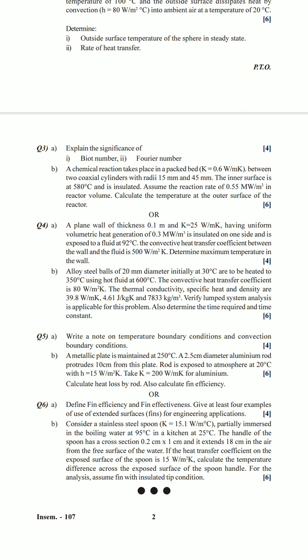Question number four B is very easy to solve because transient heat conduction has only one formula: (T − T∞) / (Ti − T∞) = e^(−hAt / ρVc). That's all you have to write in your paper and take away the six marks. I hope you can do that very easily.